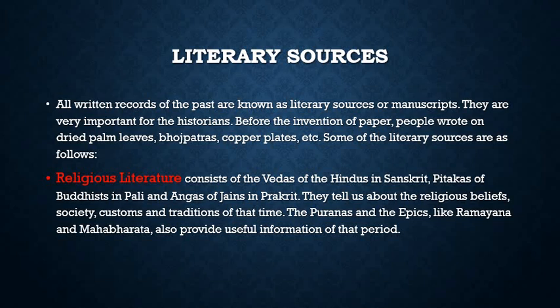Welcome back. In this video we will be discussing literary sources. Quick recap: we were studying the chapter 'History - Studying the Past.' Historians have divided history into two parts - prehistory, which refers to that period when the art of writing was unknown, and history, which refers to the period after the invention of writing. That part is again divided into three parts: ancient, medieval, and modern. We will be studying ancient history in class 6.